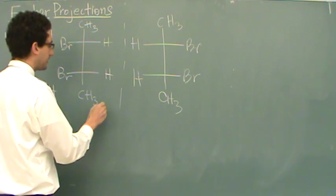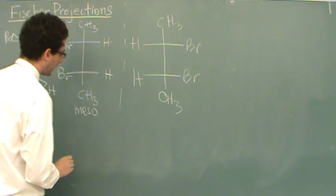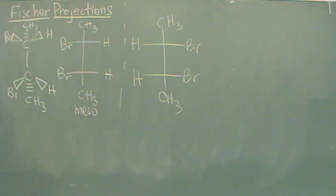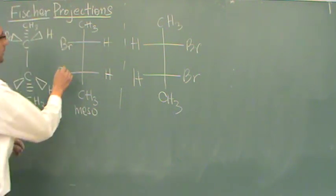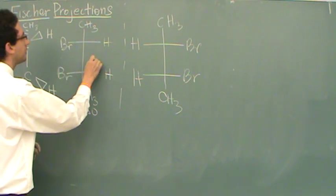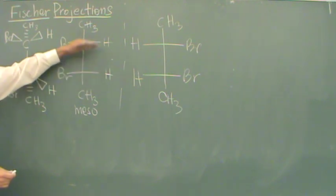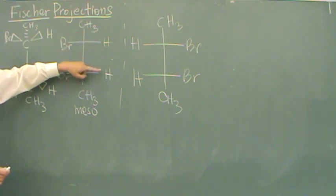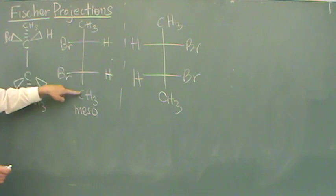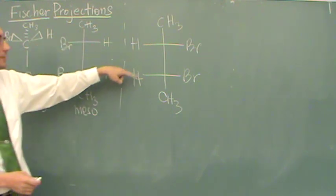That's because this is what's called a meso compound. That's when you have at least two stereocenters and you have a plane of symmetry through the center. We have what's called a meso that is reflected upon itself. It looks the same. H and H, Br and Br, CH3 and CH3. Same for this one.